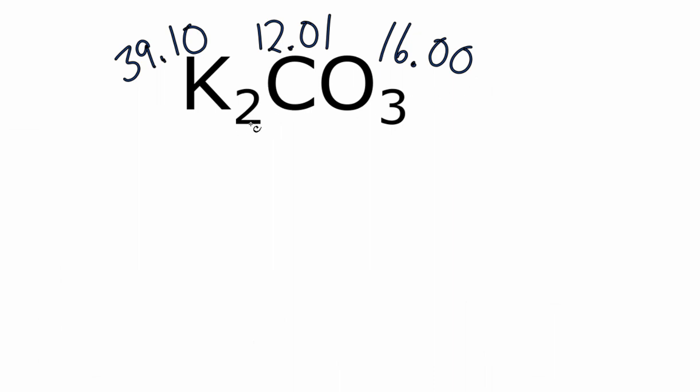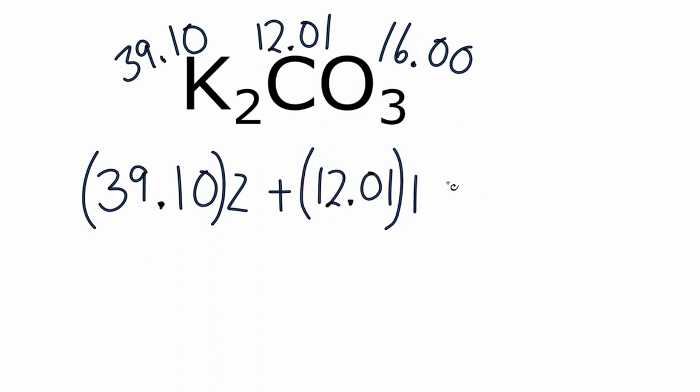Next we'll take this subscript here and multiply it by the atomic mass for each element. So we have the 39.10 for the potassium, and we're going to multiply that by the subscript 2, plus carbon, we have 12.01, and there's nothing written here, so we're going to assume that is 1, and then oxygen, 16.00 multiplied by the subscript there, 3.